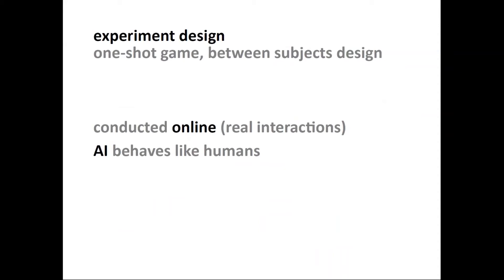Our experiment design: we studied one-shot interactions where players play the game one time and get their payoff. We used a between-subjects design — participants were randomly assigned to two treatments: either they play these games with another human, or they play with an artificial agent. We conducted these experiments online with real interactions. Our AI agent simply cooperated or defected with a human using the same frequencies we observed in human-human interactions — it behaved just like a human would.